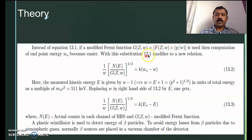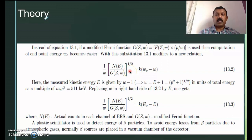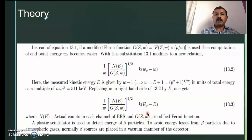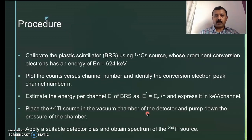With this substitution, the previous equation gets modified to a new form. The main use of this conversion is that computation of endpoint energy becomes easier using the modified Fermi function. If you plot this modified Fermi function as a function of energy, the endpoint energy appears as the x-intercept.